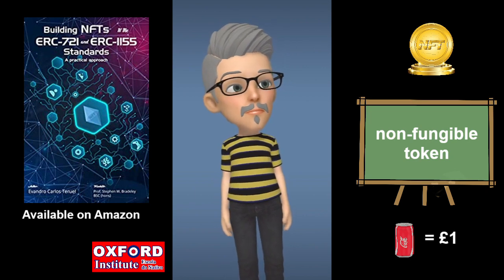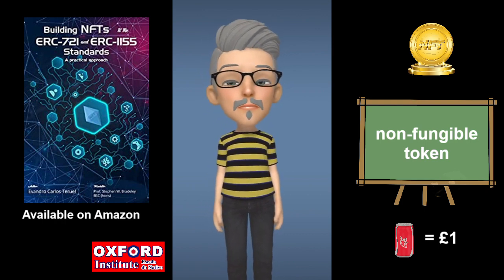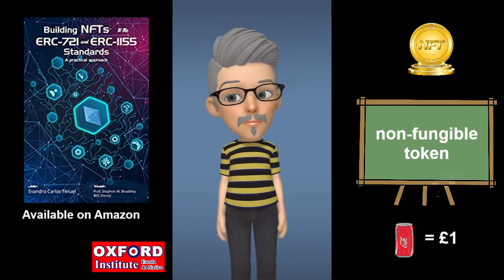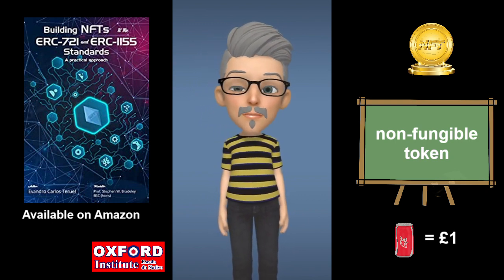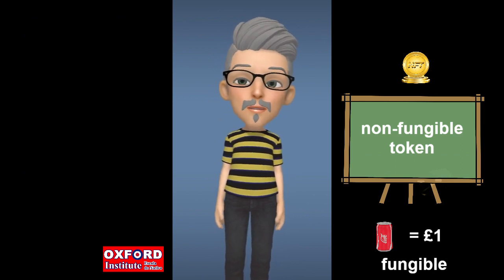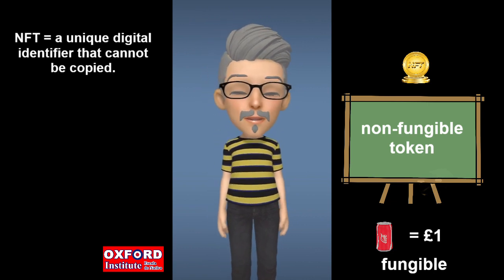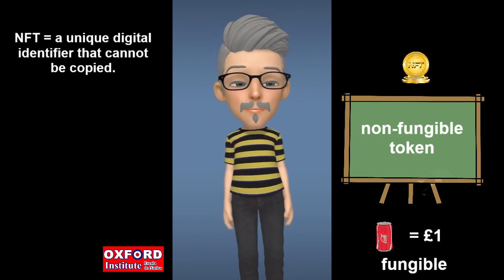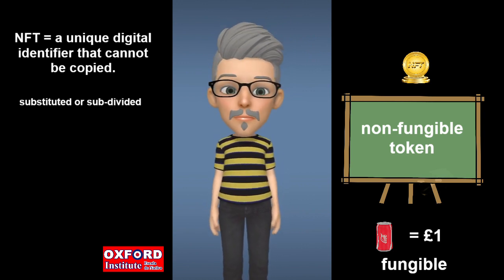But when something is non-fungible, it means it can't be exchanged for something of the same value, because very often an NFT, like me, doesn't actually exist. That's right — I don't exist. I'm a digital image. In actual fact, a non-fungible token is a unique digital identifier that cannot be copied, substituted, or subdivided. That is recorded on a blockchain.